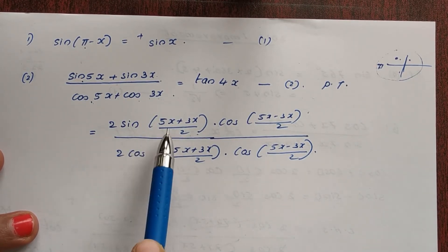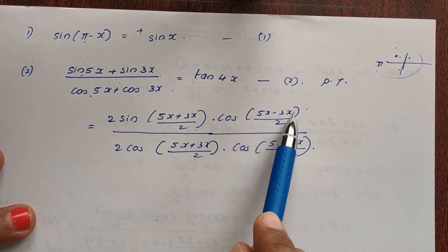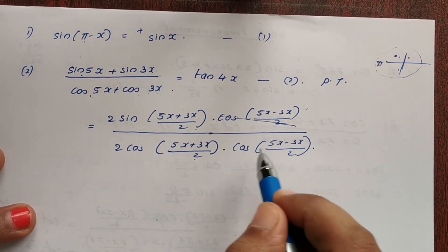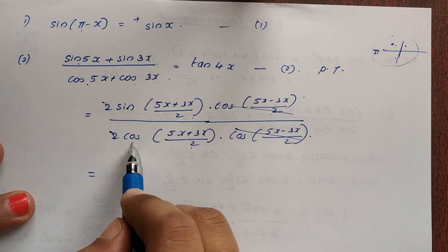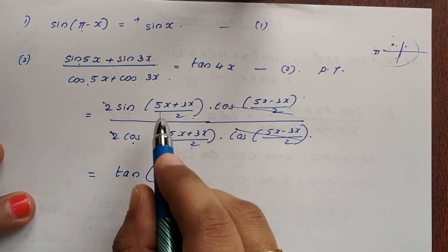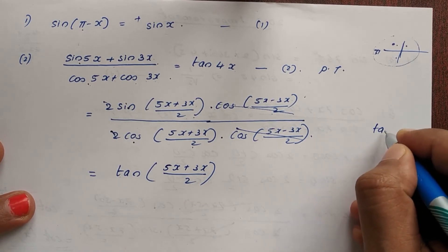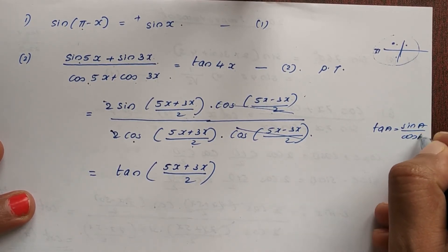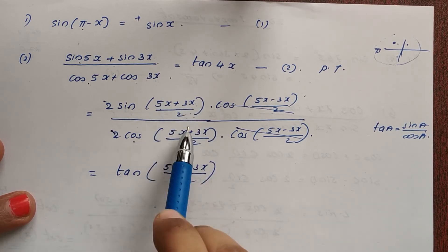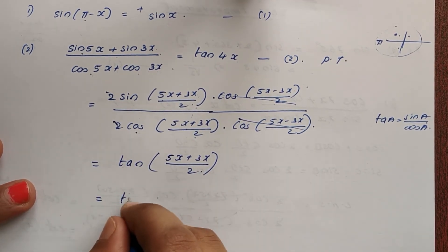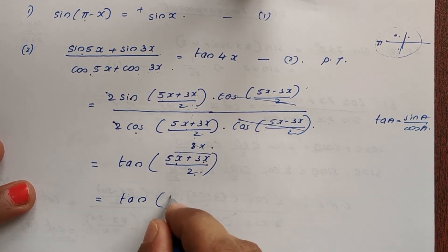The common factors cancel: cos((5x-3x)/2) cancels, and the 2s cancel. This leaves sin((5x+3x)/2) divided by cos((5x+3x)/2), which is tan((5x+3x)/2).